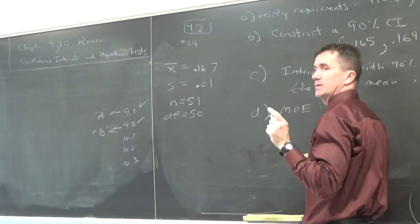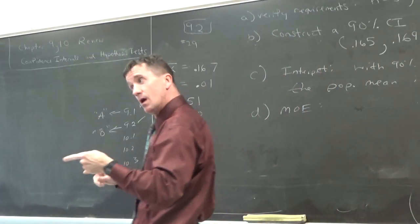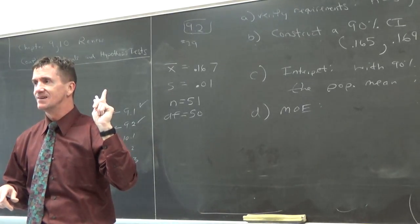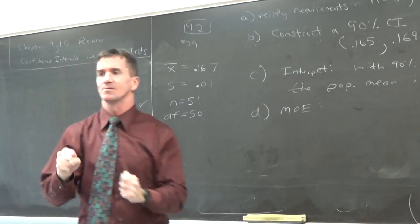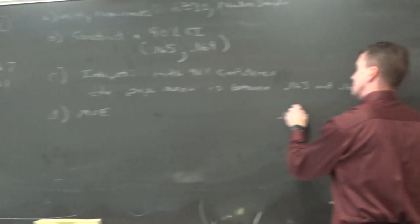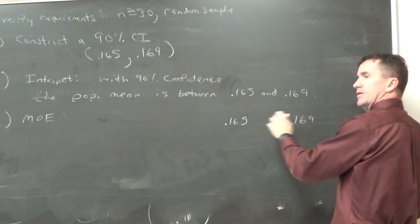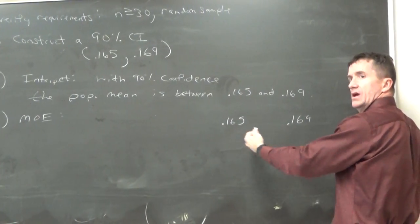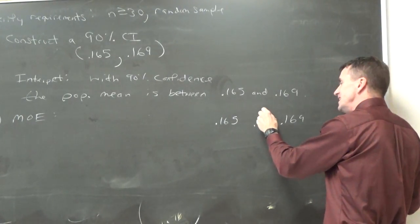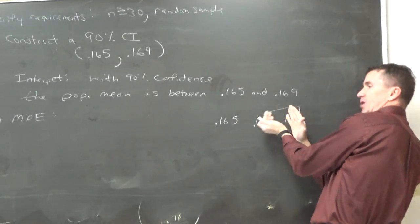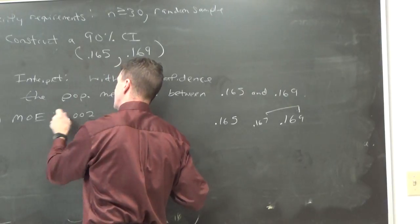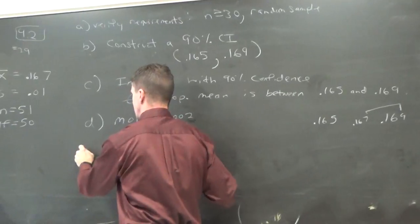Everyone, I bet you know how to get the margin of error. Use your favorite way. I'll draw a picture. I'm a picture person. There's the interval. Who's in the middle of the interval? 0.167. I just need that part. One side. That's my margin of error, 0.002. Very small. That's really small.